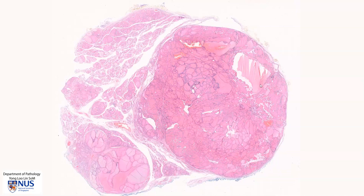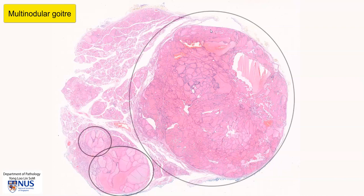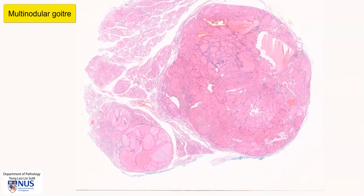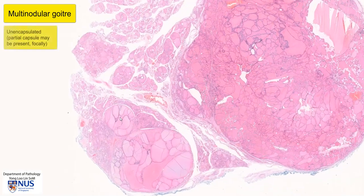This is a virtual microscopy slide of a case of multinodular goiter of the thyroid gland. At low magnification, we can see that there are several nodules — a very large nodule here, several smaller nodules — and these nodules are not encapsulated.